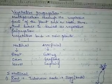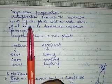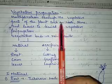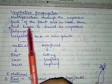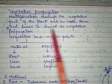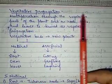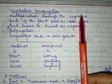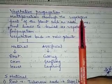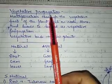What is vegetative propagation? Multiplication through vegetative parts of the plant such as root, stem, and leaves is termed as vegetative propagation. Root, stem, and leaves are called the vegetative parts of the plant. When you produce a new plant from these vegetative parts, then it is called vegetative propagation.